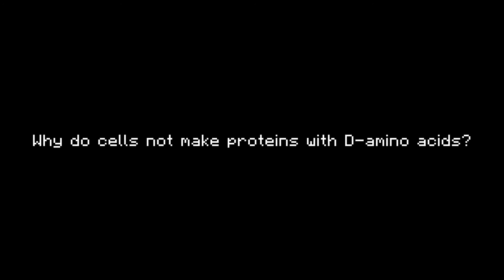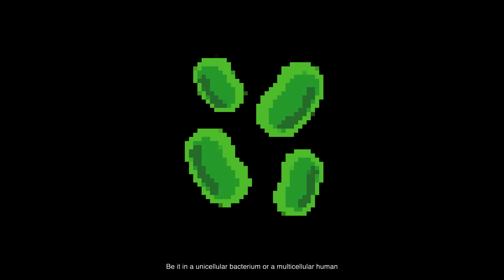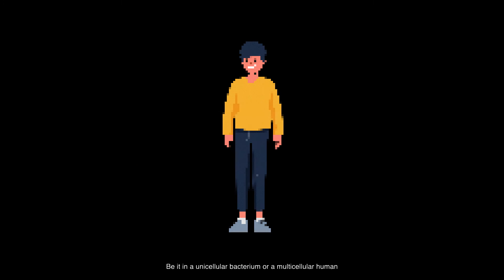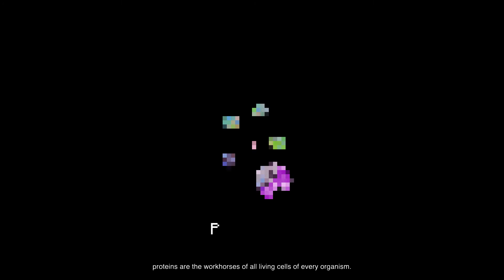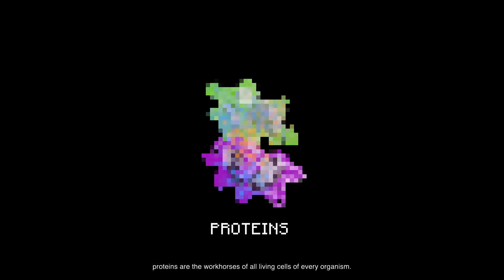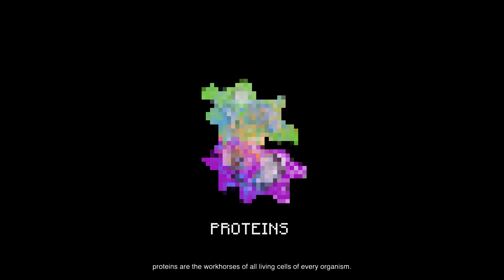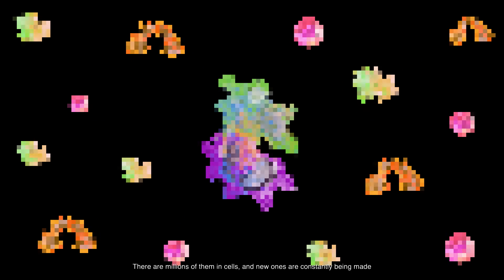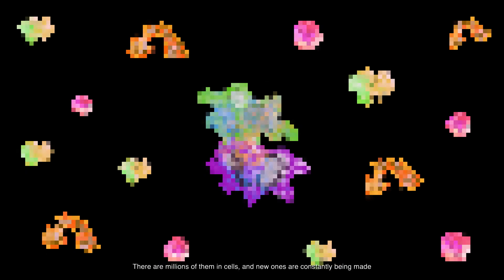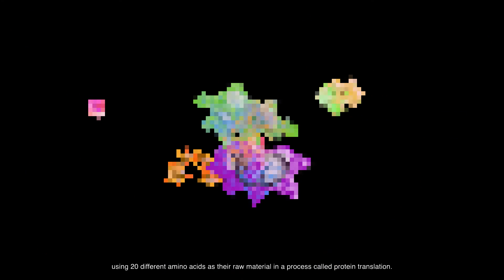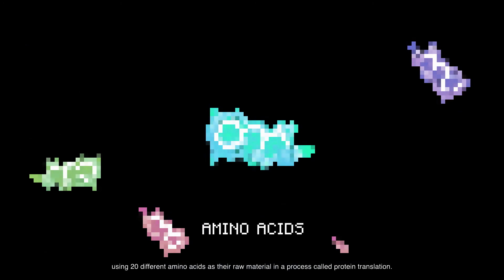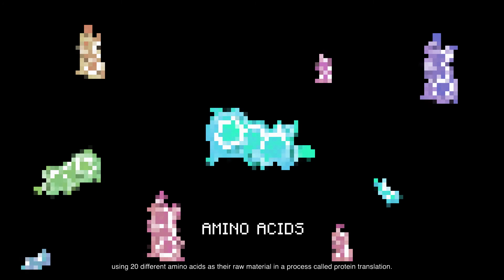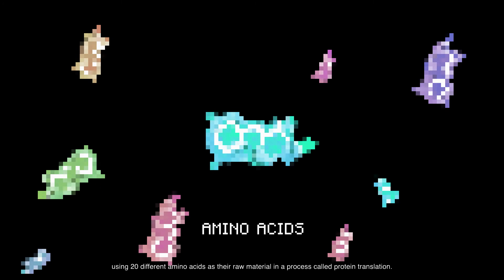Why do cells not make proteins with D-amino acids? Be it in a unicellular bacterium or a multicellular human, proteins are the workhorses of all living cells of every organism. There are millions of them in cells, and new ones are constantly being made using 20 different amino acids as their raw material in a process called protein translation.